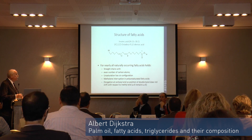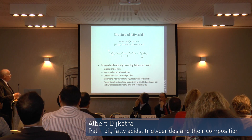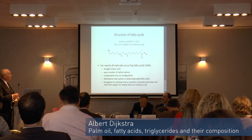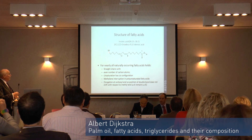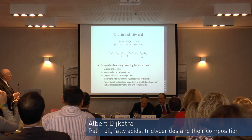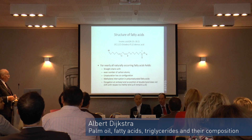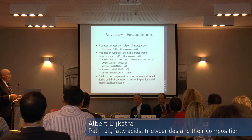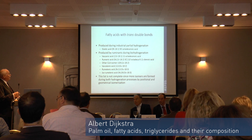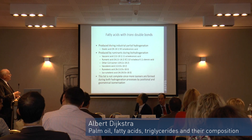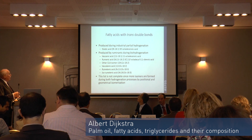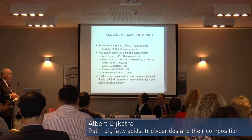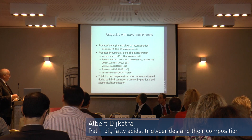Fatty acids in general are straight chains — that's how a chemist draws them. You have a carboxyl group at one end and a methyl group at the other end. You may have double bonds, which can be methylene-interrupted, which is the normal configuration. There are cis and trans fatty acids. Elaidic acid is a result of partial industrial hydrogenation. Cows and other ruminants also hydrogenate their fats and produce a wide range of trans fatty acids, and the list is not even complete.